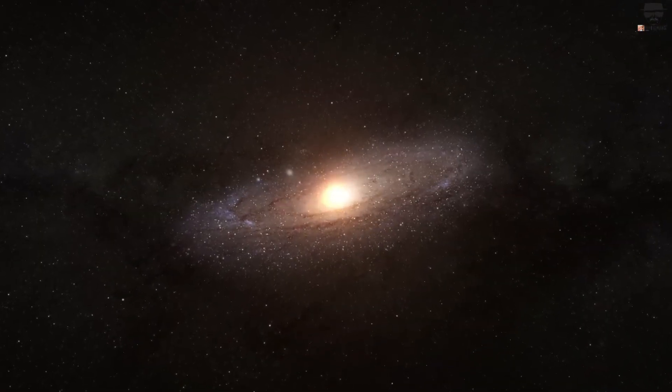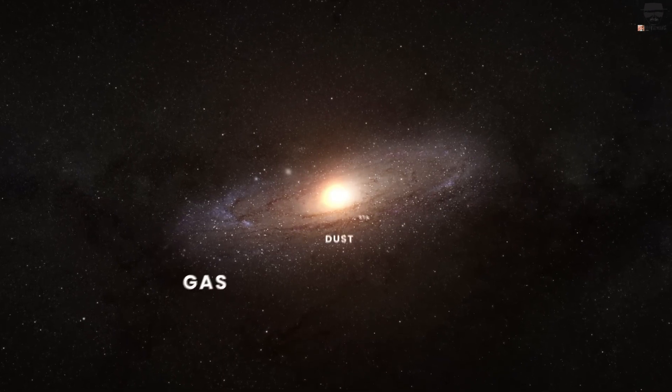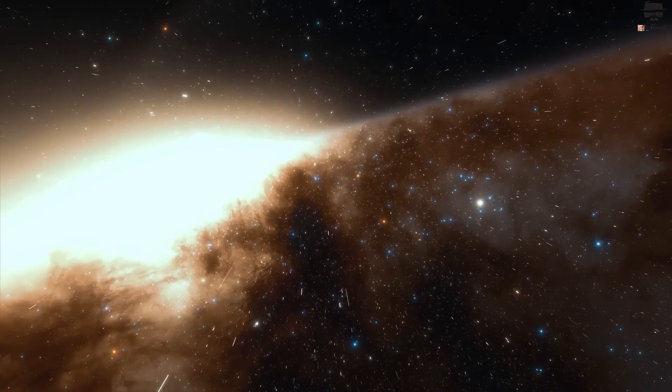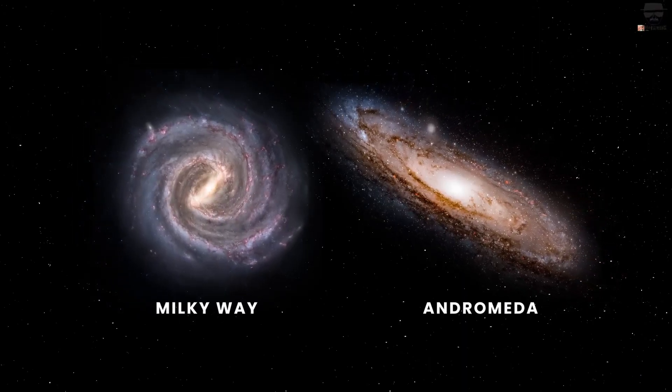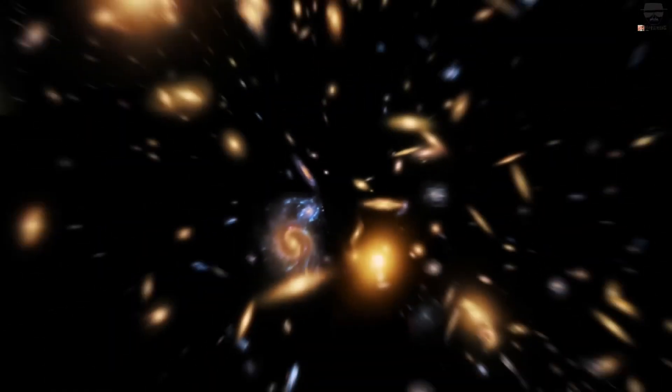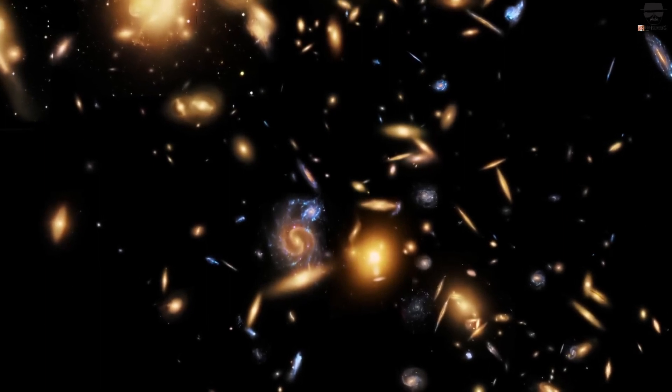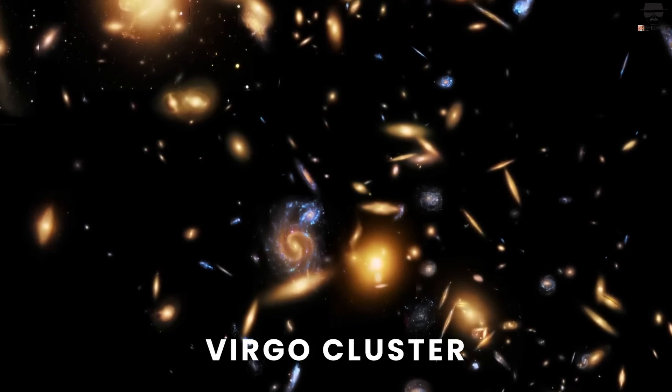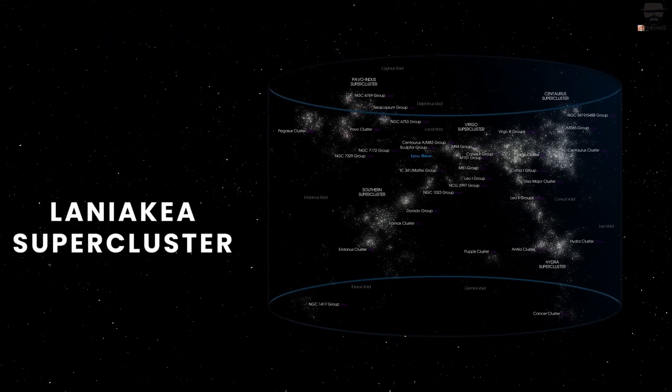However, our visibility there is severely restricted because dense clouds of gas and dust block our view. But we can see how our galaxy and other nearby galaxies are moving towards the Big Attractor. There must be a reason for this. It suggests that either there must be a large mass or that the attraction is due to something even stranger and more fantastic.